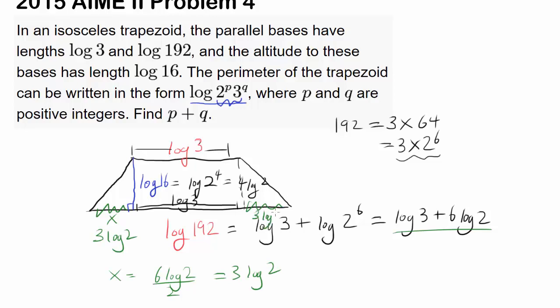Let me recap. The entire length of this base should be log 3 + 6 log 2. Since this length equals log 3, you want each of them to have 3 log 2. When you add all these up, you get log 3 + 6 log 2.